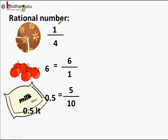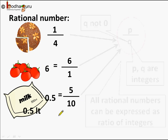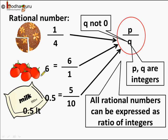Here we have rational numbers: 1 by 4, 6, and 0.5. All these are rational numbers because all of them can be expressed as a ratio of integers. 1 by 4 stays as is, 6 can be written as 6 by 1, and 0.5 can be written as 5 by 10. So all these are expressed in the format p by q with q not equal to 0, and p and q are integers — hence all of these are rational numbers.